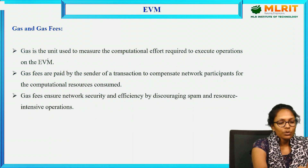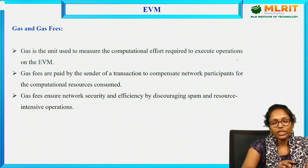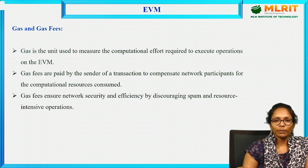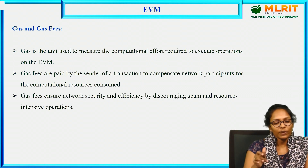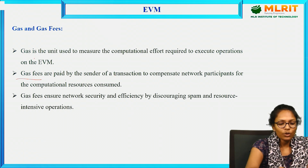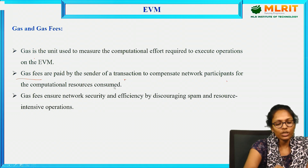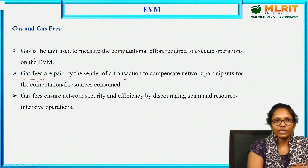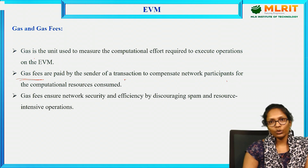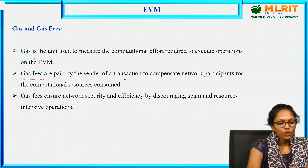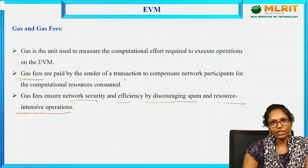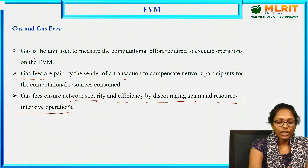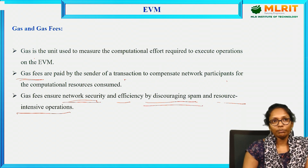Gas is the unit used to measure the computational effort required to execute operations on the EVM — it measures how many computations have been performed and how much that costs. Gas fees are paid by the sender of the transaction to compensate network participants for the computational resources consumed. This amount is used to reward the nodes that validate the blocks. Gas fees also ensure network security and efficiency by discouraging spam and resource-intensive operations.